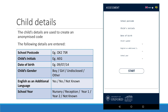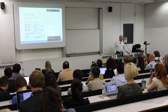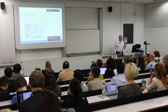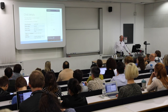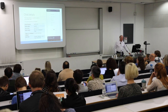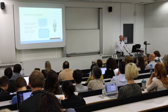We've also just added a question about whether the child is EAL or not, and the year of school they're in. These details are used by the app to generate a code to identify each child.